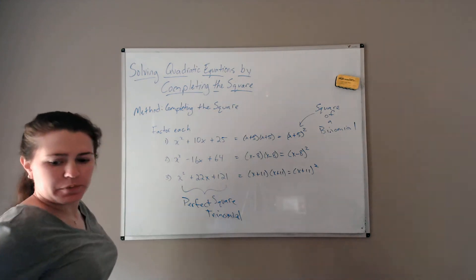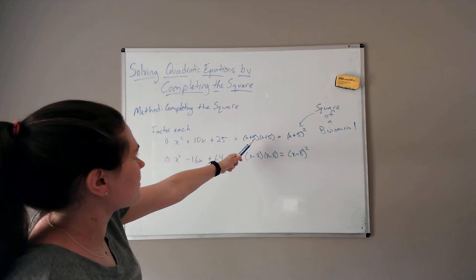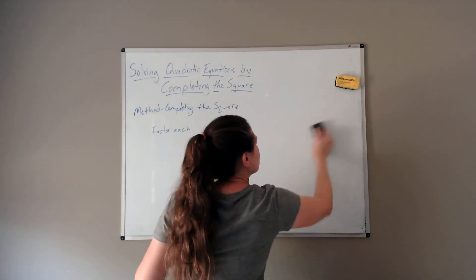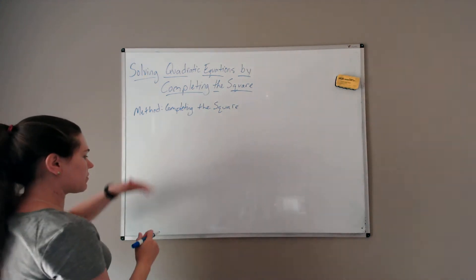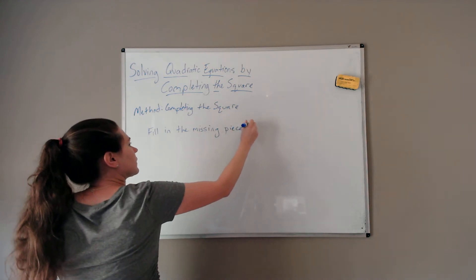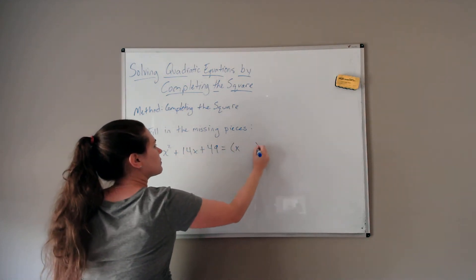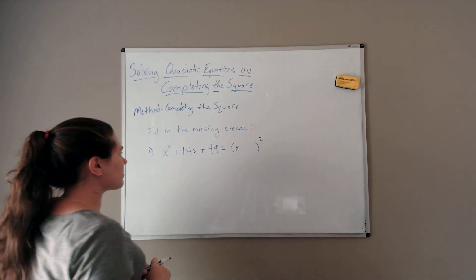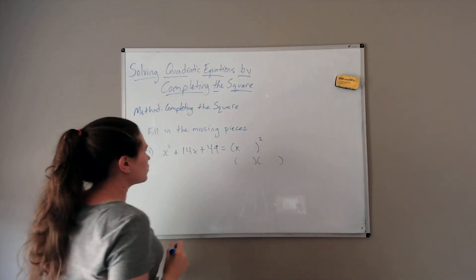Hopefully we picked up on a pattern here. x squared plus 10x plus 25 factors as x plus 5 times x plus 5. Based on the pattern you saw, fill in the missing pieces. Number 1: x squared plus 14x plus 49 equals x plus something squared. We're saying this quadratic trinomial can be rewritten as the square of a binomial — what value goes there so that it's the same expression twice?